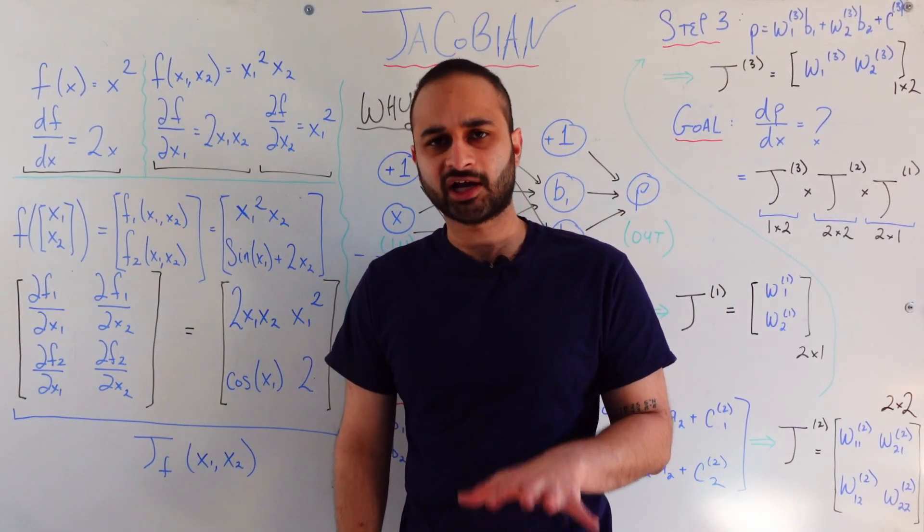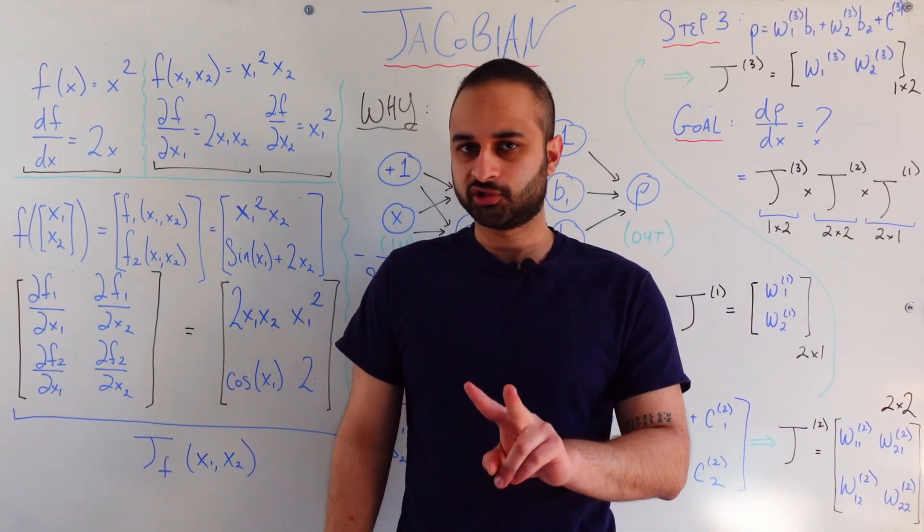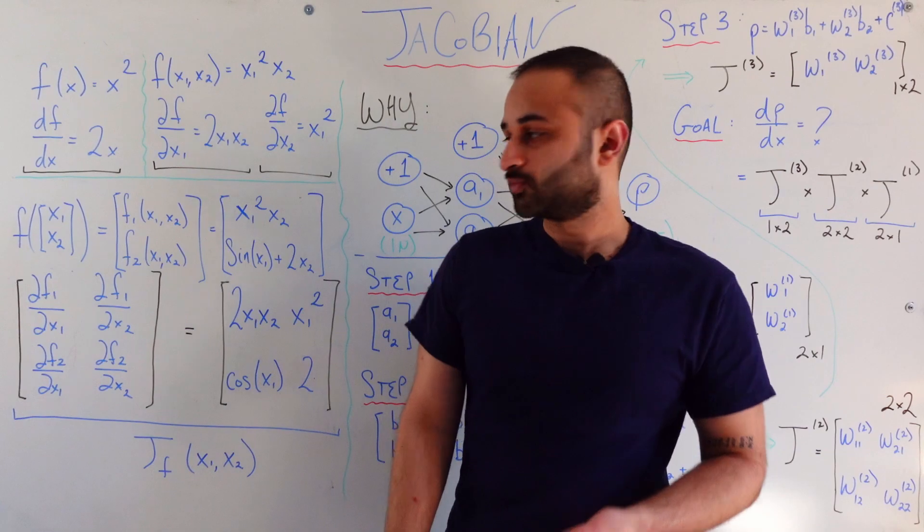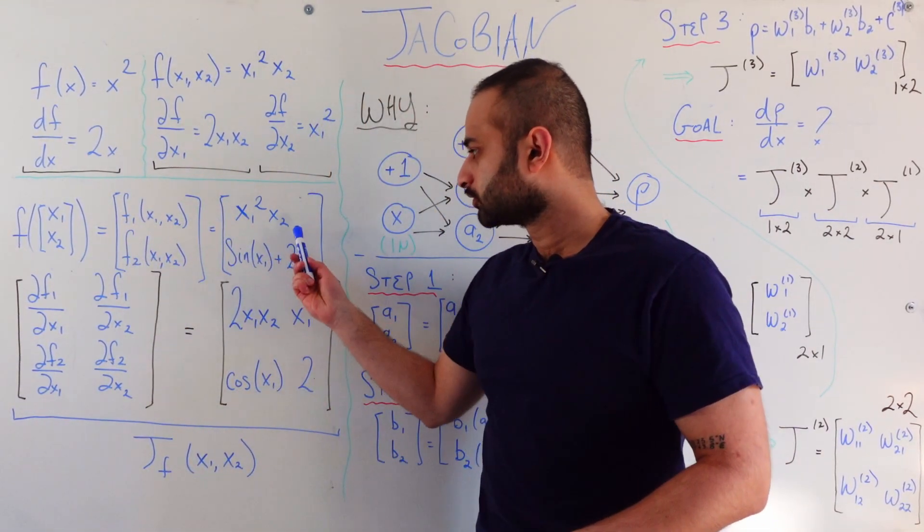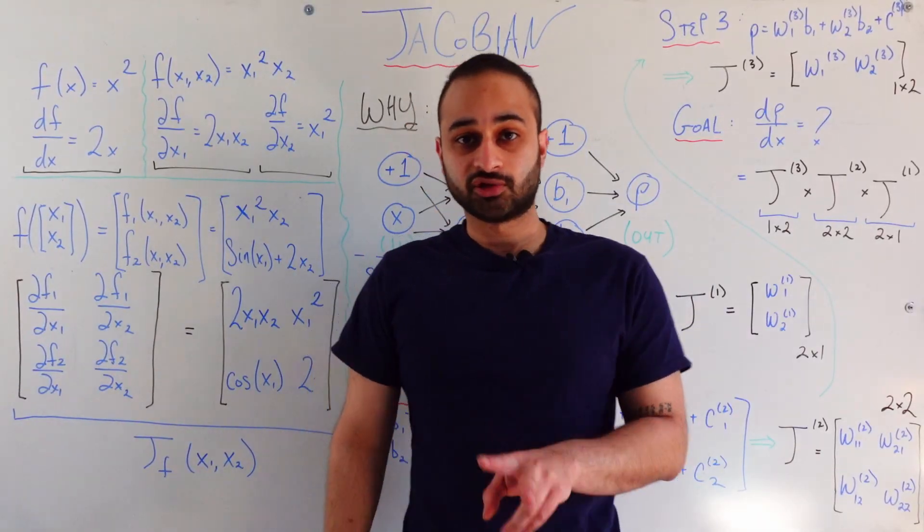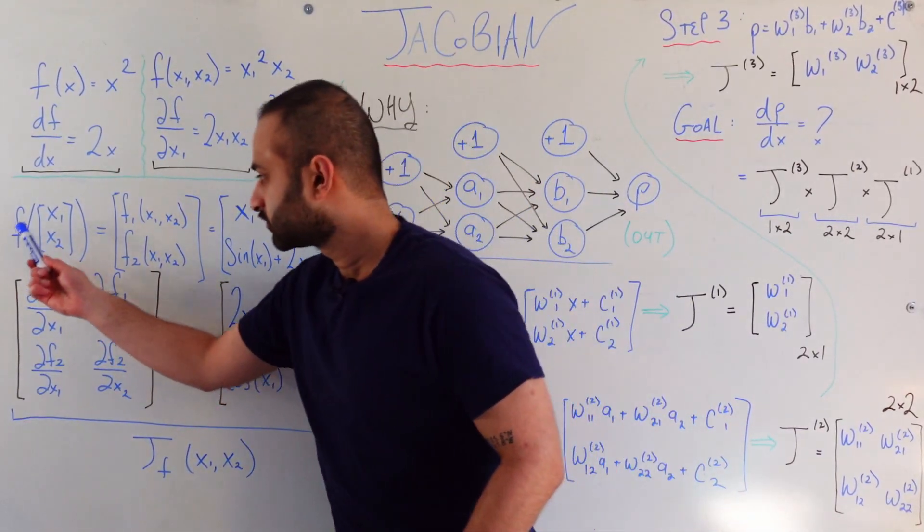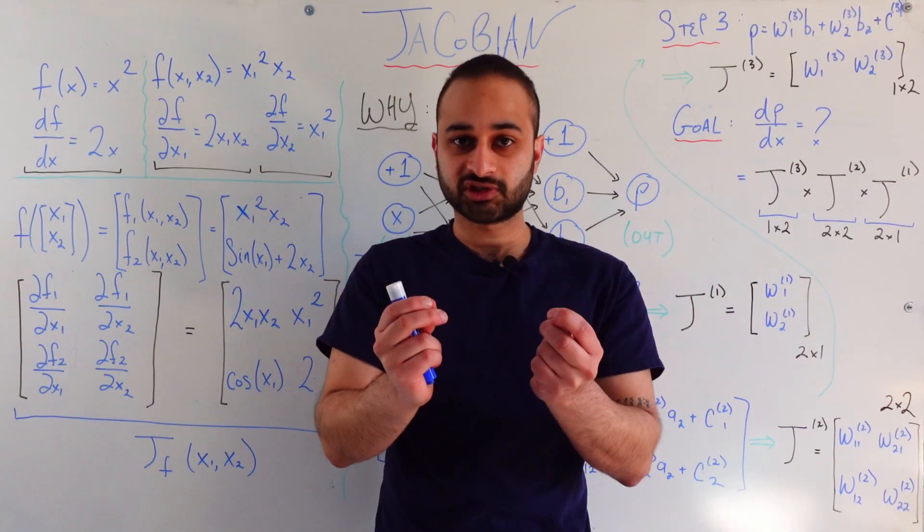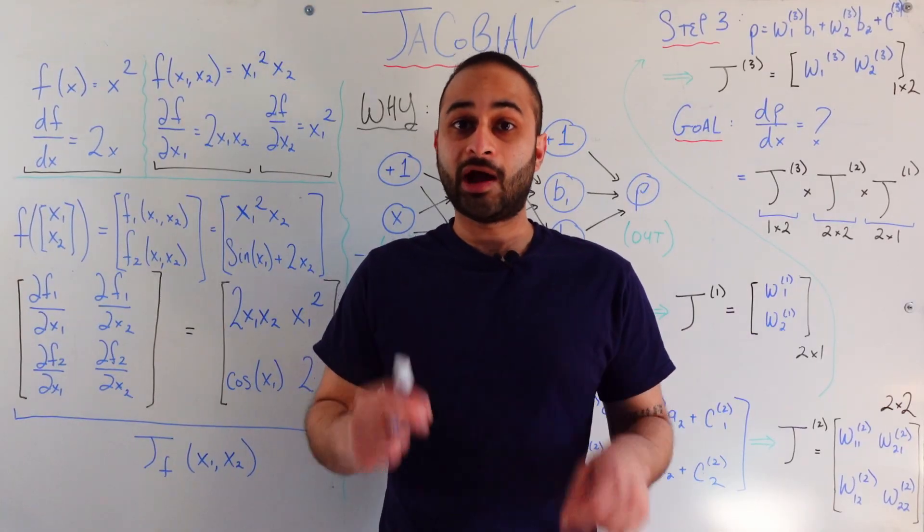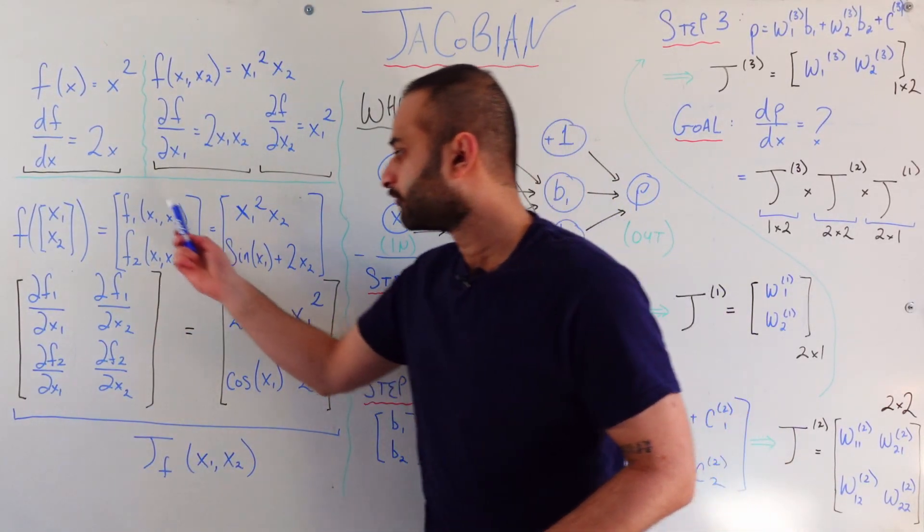So let me just backtrack and make sure everyone's on the same page here. We have two variables, x1 and x2. The first thing we do is put them into this top function, f1, and we get this result here. The next thing we do is take those two variables, put them in the bottom function, and we get this result here. So that this function f, its job or its objective is to take in two variables, x1 and x2, and also output two variables, namely this guy and this guy, or f1 and f2.